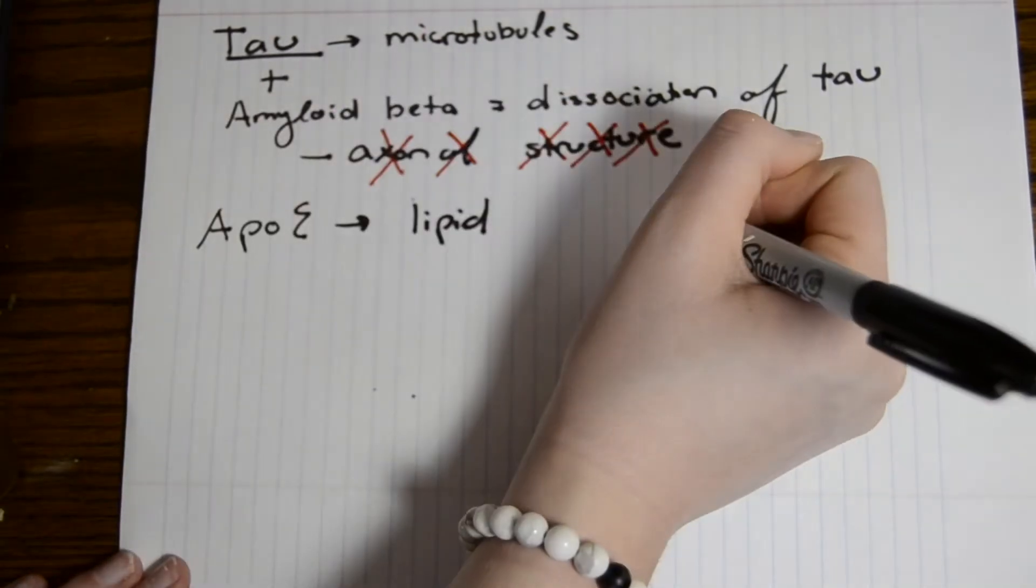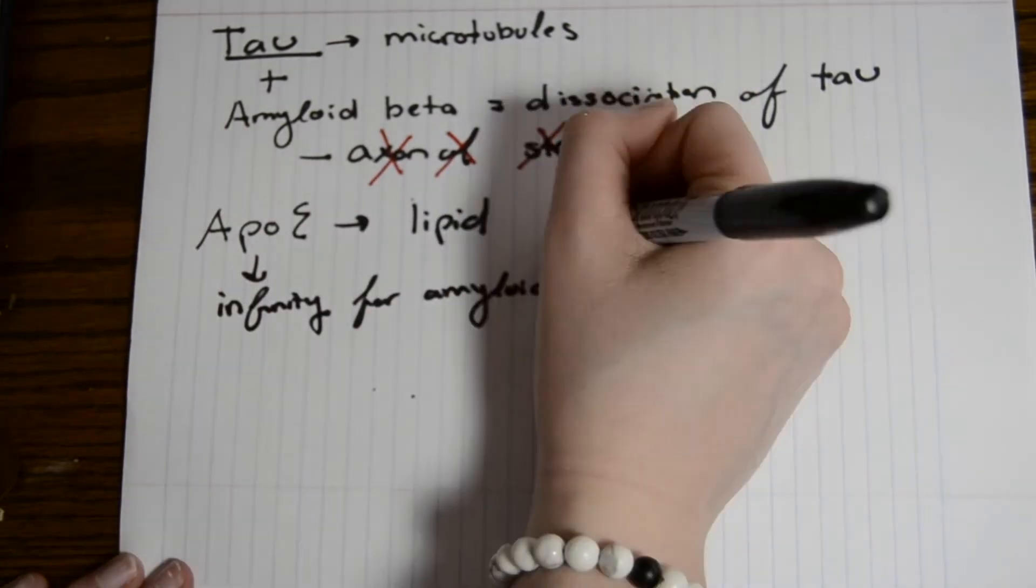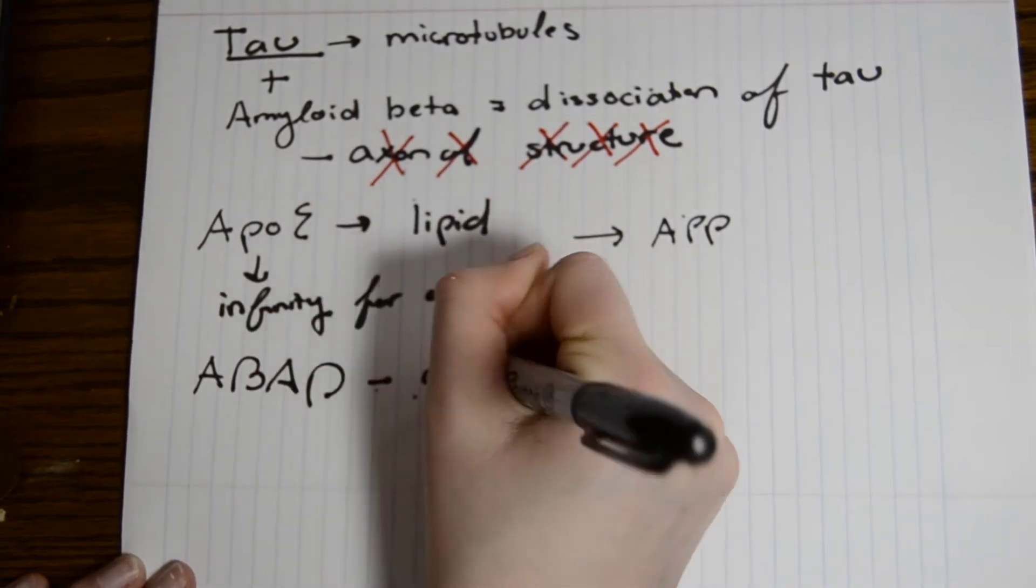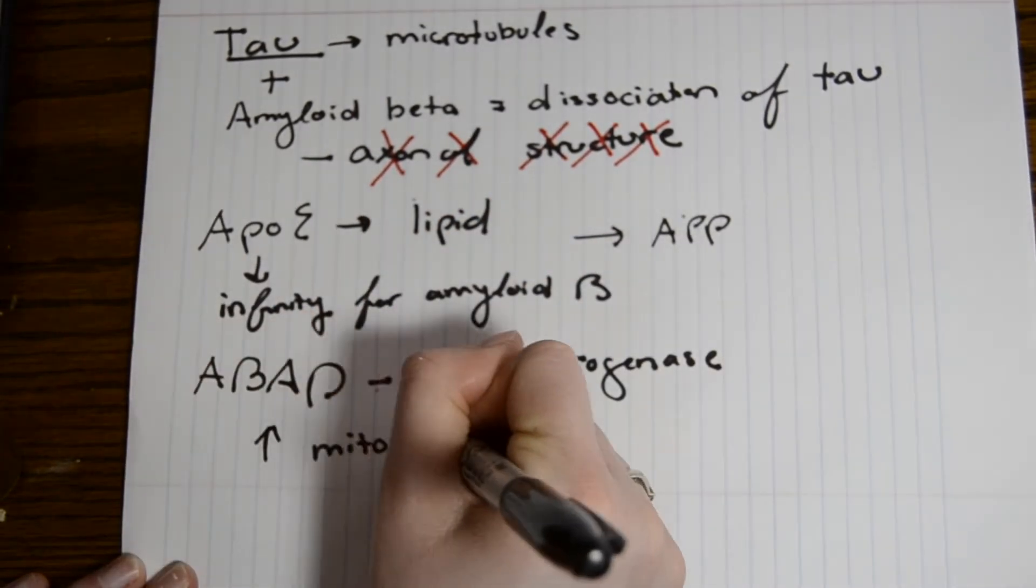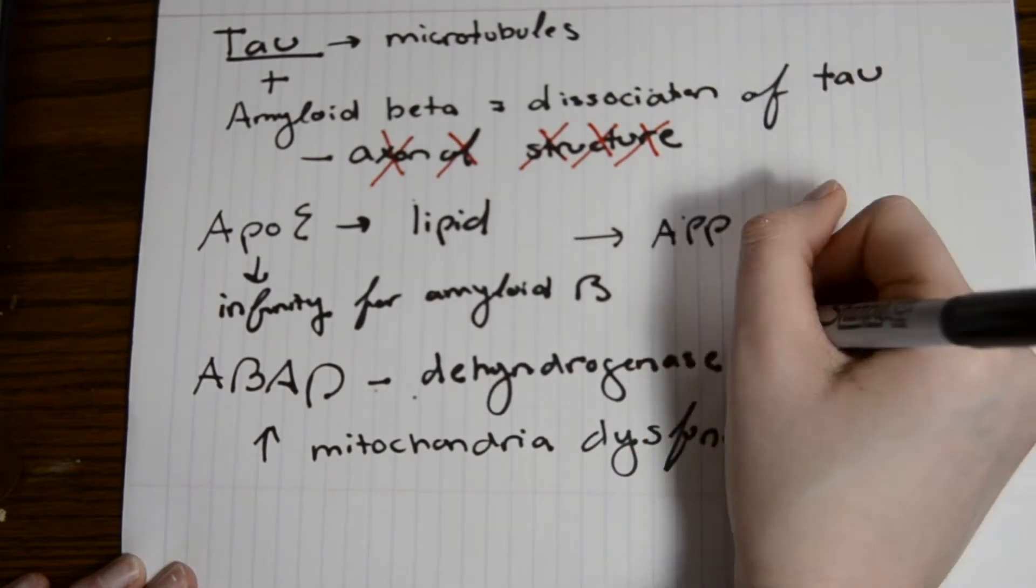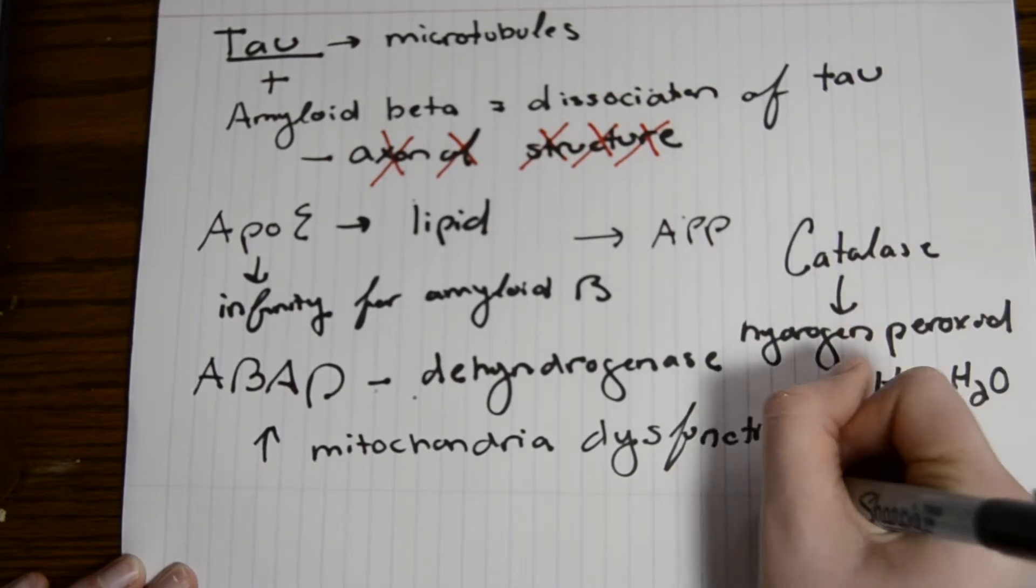APOE is involved in lipoprotein metabolism, which has a natural affinity for amyloid beta. This, however, causes recycling of amyloid beta to be produced from APP. This also causes an increase in mitochondrial dysfunction when connected to this peptide.